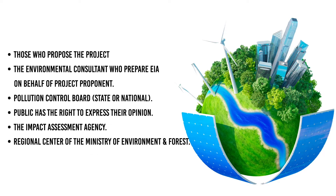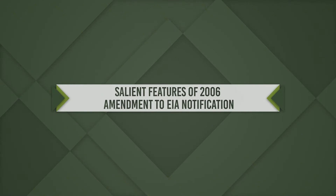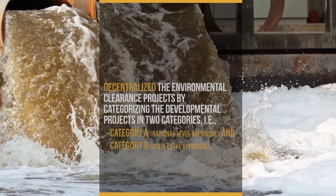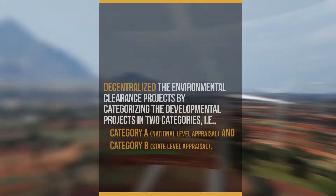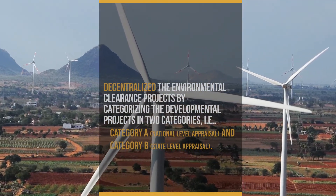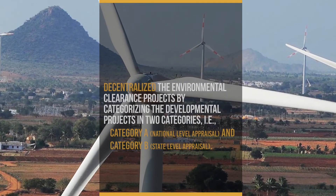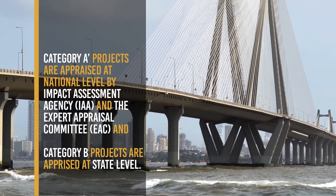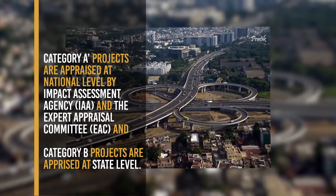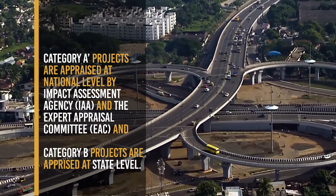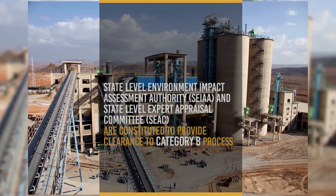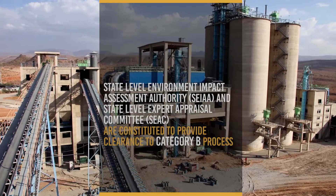The salient features of the 2006 Amendment to EIA Notifications are: 1. The Environment Impact Assessment Notification of 2006 has decentralized the environmental clearance of projects by categorizing developmental projects into two categories — Category A (National Level Appraisal) and Category B (State Level Appraisal). 2. Category A projects are appraised at national level by the Impact Assessment Agency and Expert Appraisal Committee. 3. Category B projects are appraised at state level. State Level Environmental Impact Assessment Authority and State Level Expert Appraisal Committee are constituted to provide clearance to Category B projects.